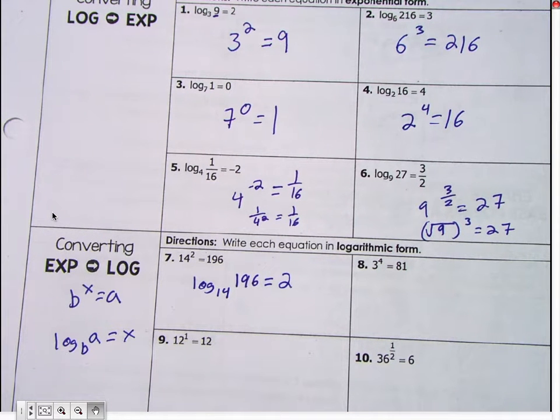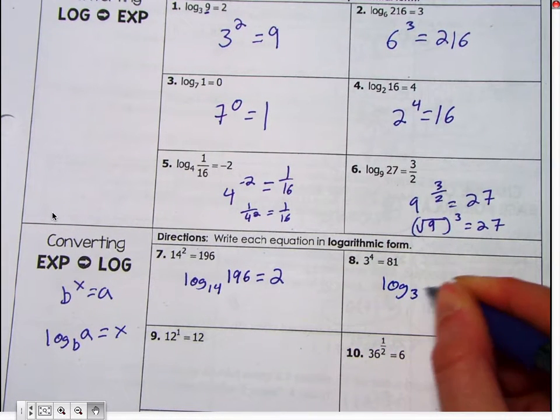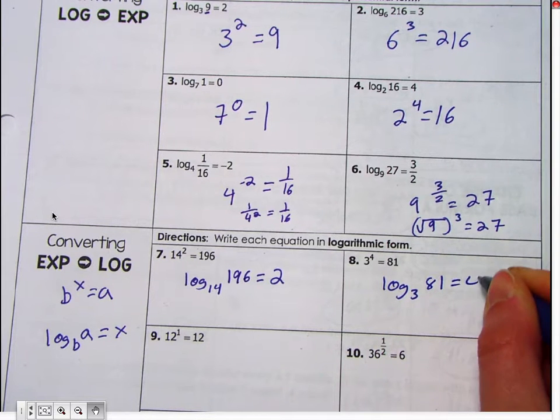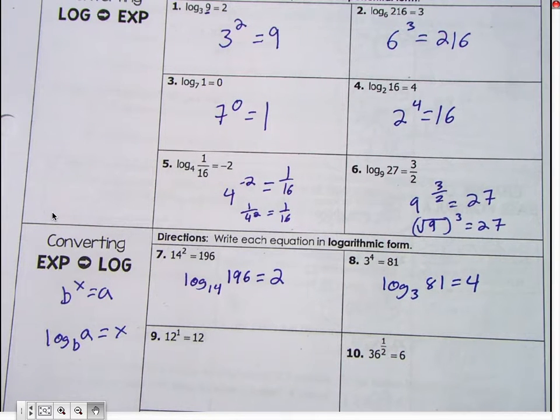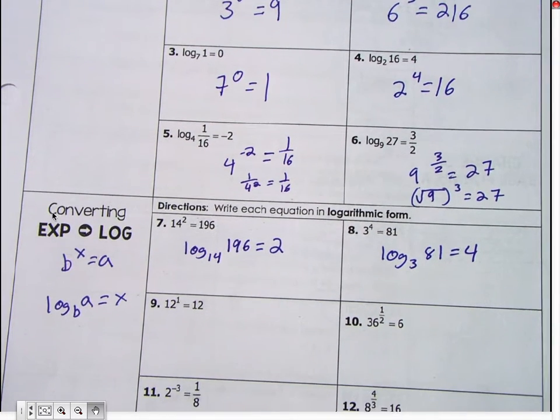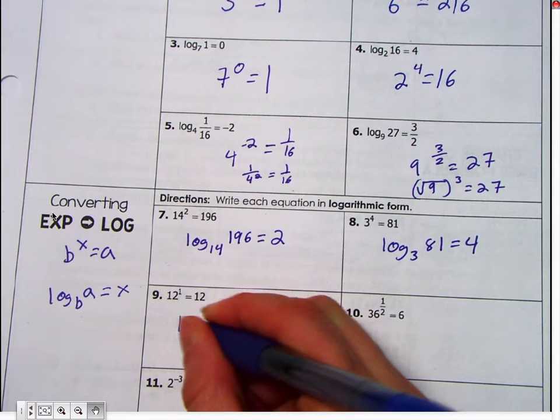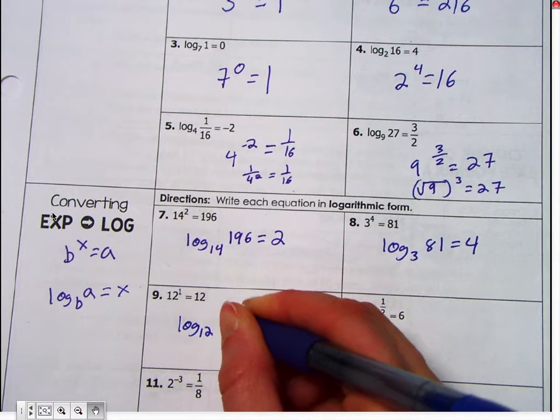Who wants to try number eight? Michelle, go. I want log three of eighty-one equals four. Good. All right. Kyle, you want to try the next one? Log two. Okay. Log four. Yep.